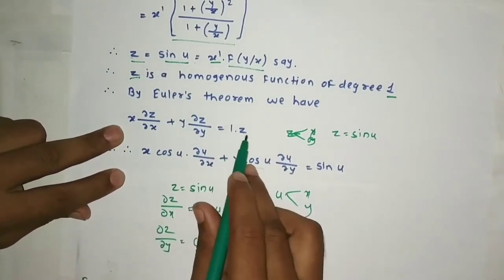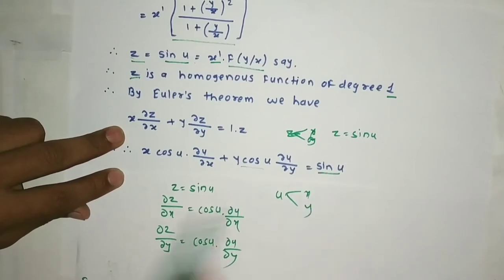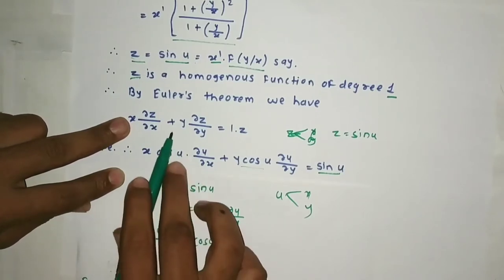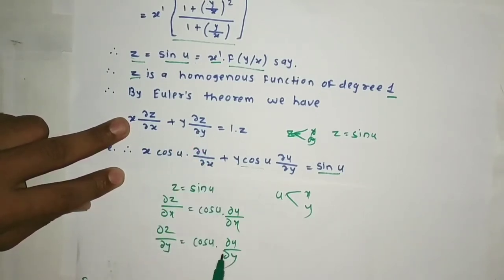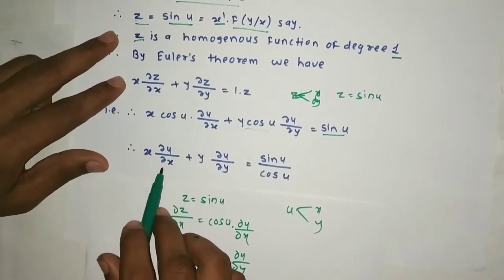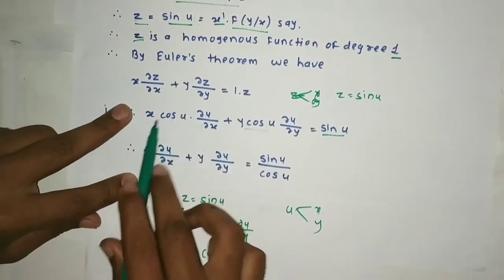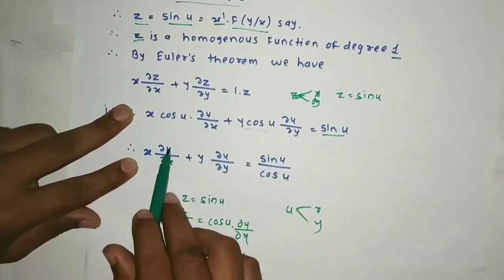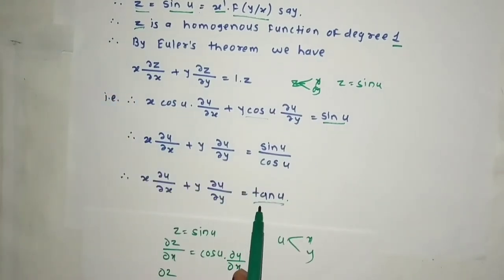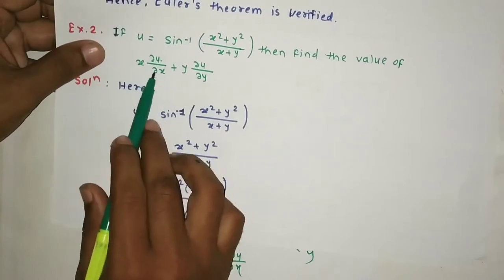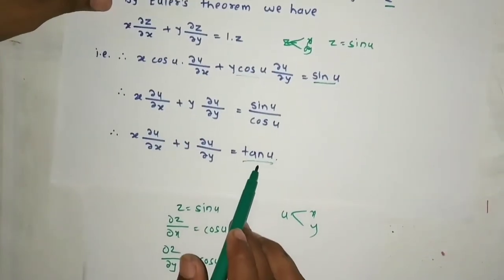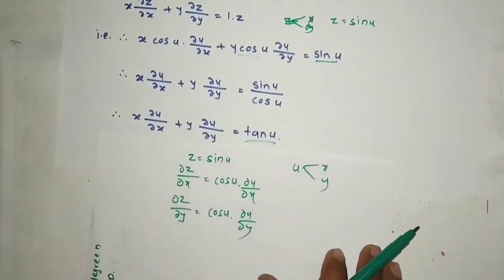Putting these into Euler's theorem: x · cos u · ∂u/∂x + y · cos u · ∂u/∂y = sin u. Taking cos u as common: cos u · (x · ∂u/∂x + y · ∂u/∂y) = sin u. Dividing both sides by cos u: x · ∂u/∂x + y · ∂u/∂y = tan u.